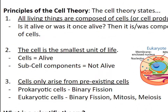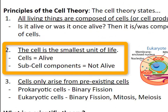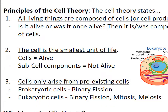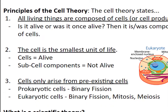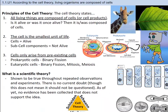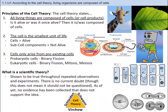The second part of the cell theory is that cells are the smallest unit of life — the smallest structures capable of surviving on their own. The third part of the cell theory states that cells come from pre-existing cells and cannot be created from non-living material. For example, new cells arise from cell division, and a zygote arises from the fusion of an egg cell and a sperm cell.